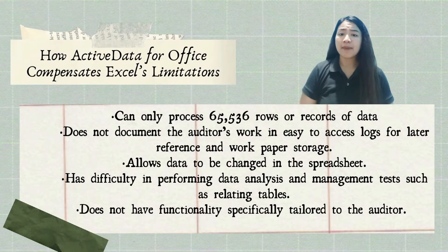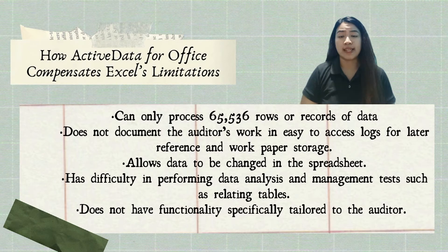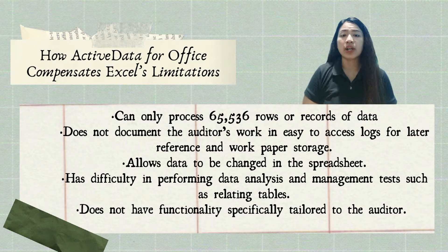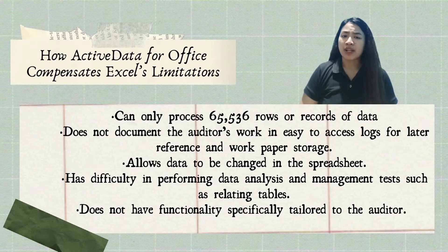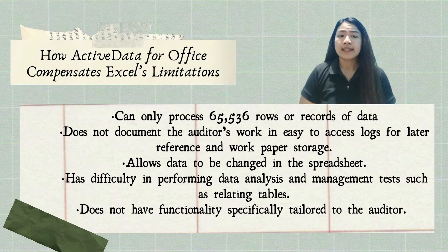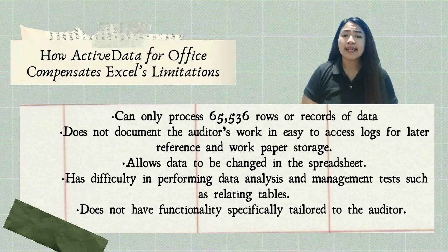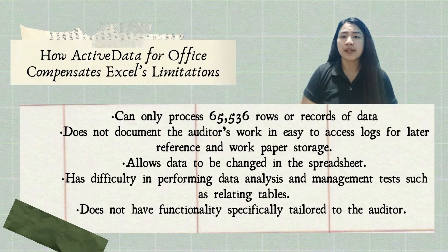There are five Excel limitations that Active Data can manually compensate for. Active Data can process more than 65,000 rows or records of data. Each processing step is logged by Active Data for Office. Then, using the Index Table function, you can quickly build a summary page with all of the comment fields for review.